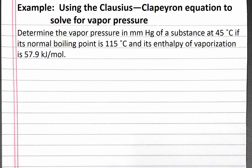In this example problem, we'll use the Clausius-Clapeyron equation to solve for vapor pressure at a given temperature. Our problem reads: determine the vapor pressure in millimeters of mercury of a substance at 45 degrees Celsius if its normal boiling point is 115 degrees Celsius and its enthalpy of vaporization is 57.9 kilojoules per mole.